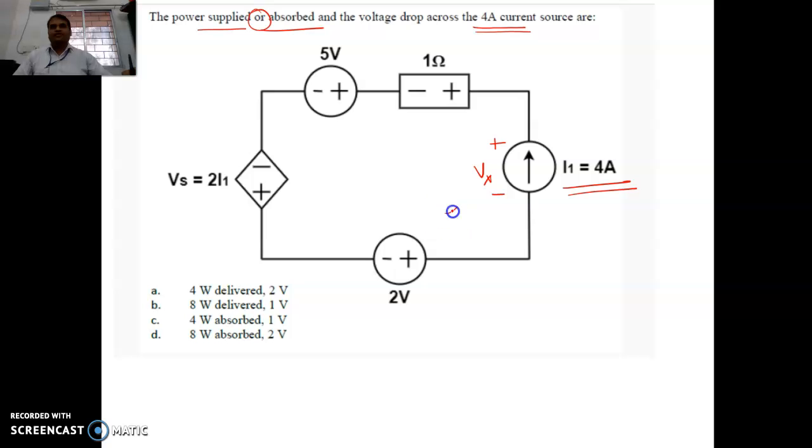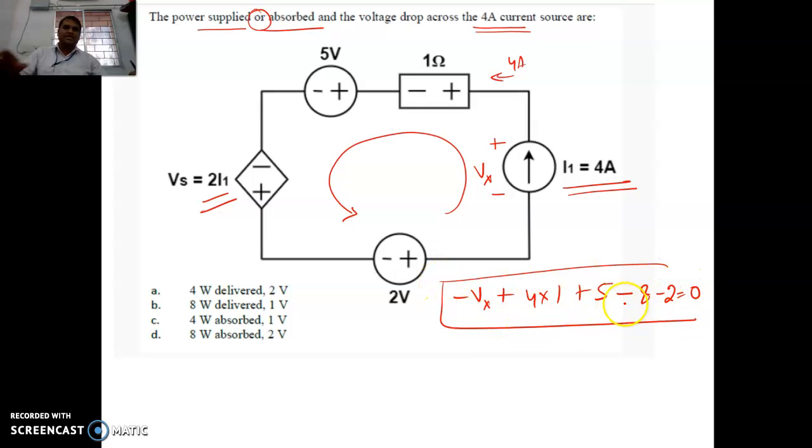So if we put a KVL, we move in any one direction. If I move in one direction, I encounter first minus. So minus Vx, then plus. The current is 4 ampere throughout the network. So 4 into 1 ohm. Then plus is encountered, then 5. Then again minus is encountered, minus 2I1. I1 is already there, so 2 into 4 is 8. Then again minus is encountered, minus 2 equals 0.